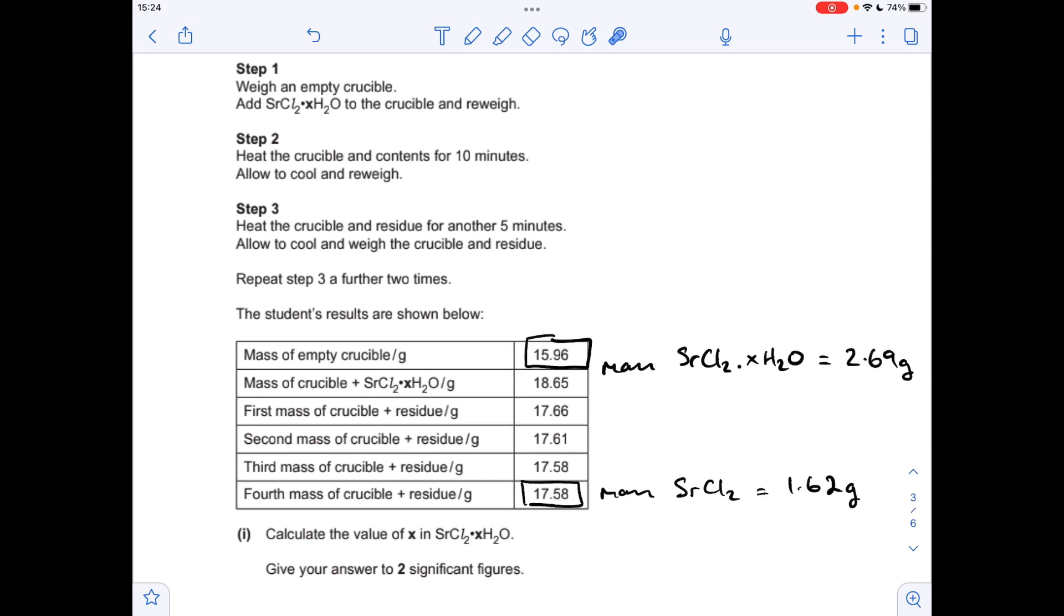The next mass we'll calculate is the mass of anhydrous strontium chloride. That's obviously the mass of the crucible at the very end of the experiment minus the mass of the empty crucible. That's coming out at 1.62 grams.